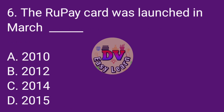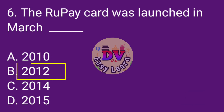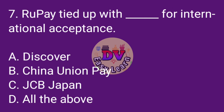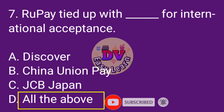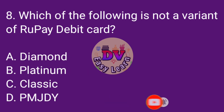Question number 6: The RuPay card was launched in March. Question number 7: Which of the following is a feature of RuPay? Correct answer: all the above — for international acceptance, Discover, and China Union Pay networks.